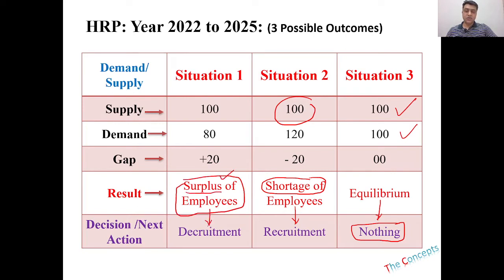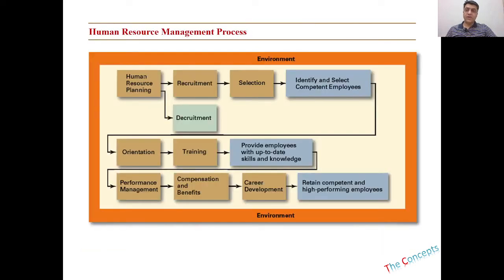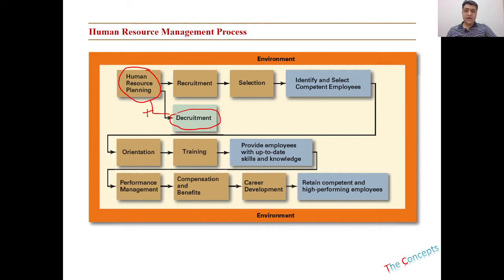If you have a surplus, you will go towards decrecruitment. Decrecruitment means getting rid of excess people to regain balance — if you need 80 people, you must have 80 people. Looking at this diagram, after human resource planning, if there is a surplus (a plus sign), you go towards decrecruitment: retiring people, not renewing their contracts, or other actions to make the numbers equal.